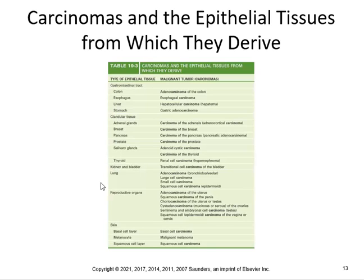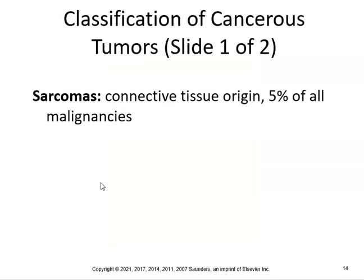Carcinomas are epithelial in origin and make up 90 percent of all malignancies. Looking at epithelial tissues: the GI tract gives adenocarcinoma of the colon, esophageal carcinomas, hepatocellular carcinomas from the liver, and gastric adenocarcinomas from the stomach. Breast, pancreatic, and prostate carcinomas are also common. Skin malignant melanomas of melanocytes are a very common skin cancer.